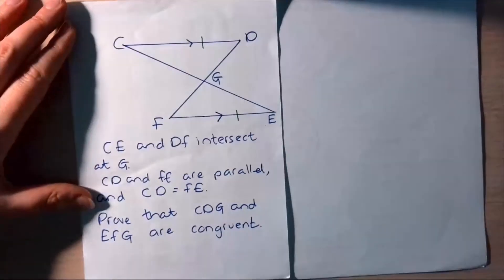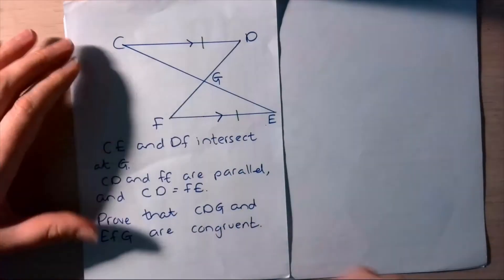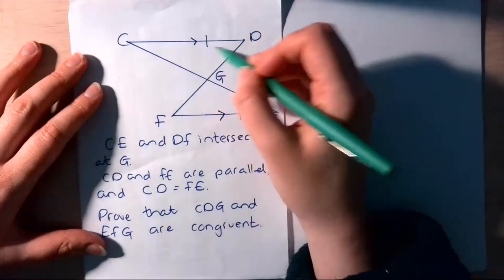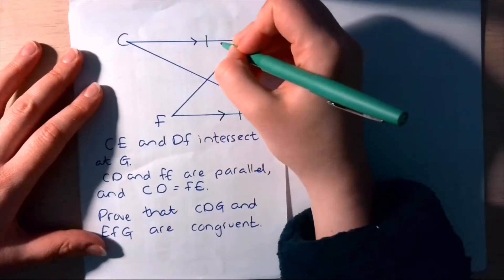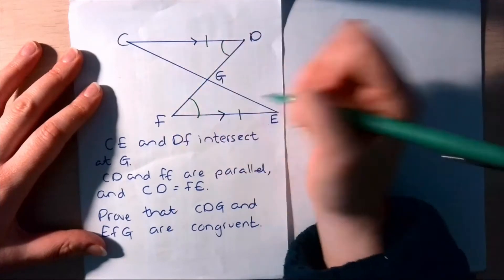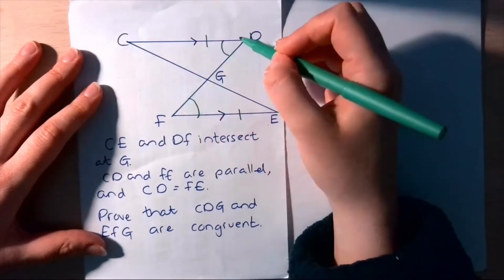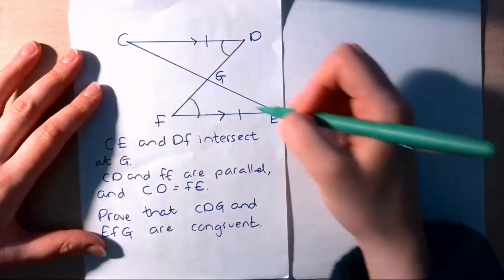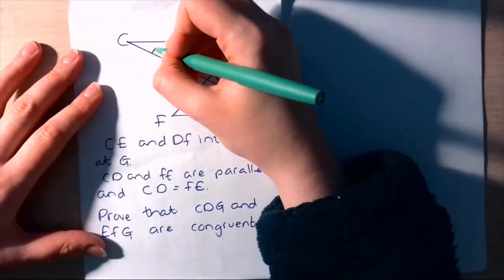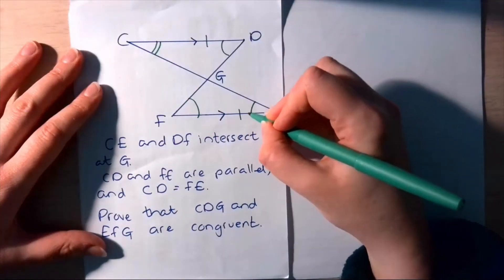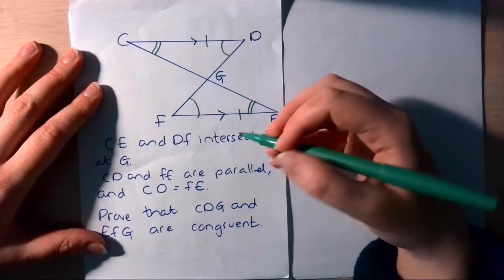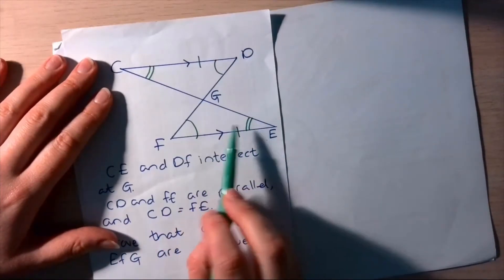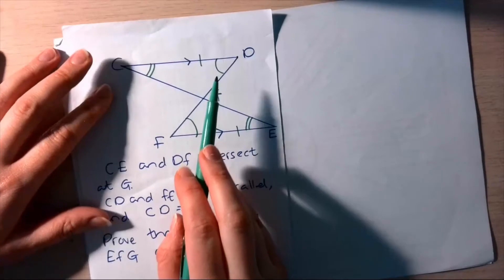The first thing to do is pay attention to the parallel lines. What I can see is an alternate angle — a Z angle — so these angles are the same, because a straight line is cutting through the parallel lines. The same applies for these angles here — another alternate angle. We've now got angle, side, angle — so we've proven these are congruent by using the ASA rule.